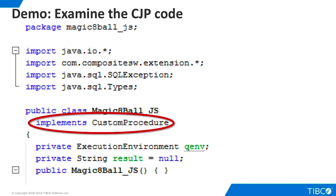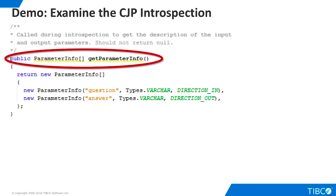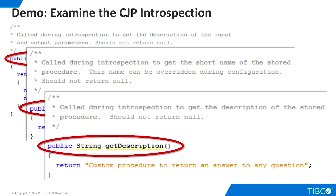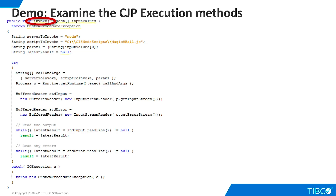The Custom Procedure interface is what we must implement. Some of its methods are called when TDV introspects the CJP, and others are called at execution time. Let's examine the methods that are called at introspection time. GetParameterInfo returns information about the procedure's input and output parameters. GetName returns a short name for the procedure. GetDescription returns a description of the procedure.